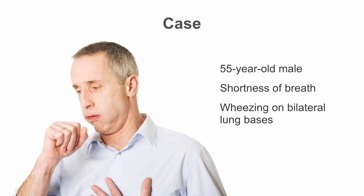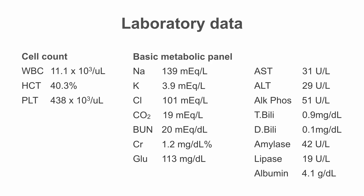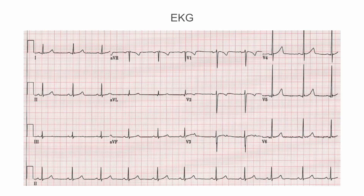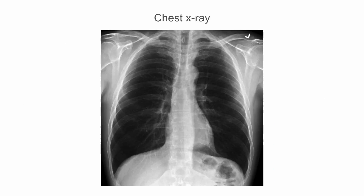So here's your data. A quick look, and you can probably tell that there aren't any concerning abnormalities on his lab work. Here's his EKG — you notice he's in normal sinus rhythm and doesn't have any acute concerning changes. Here's his chest x-ray: no signs of pulmonary congestion, no infiltrates, no pleural effusions. Looks pretty normal.